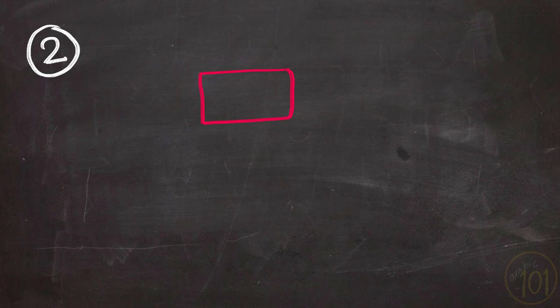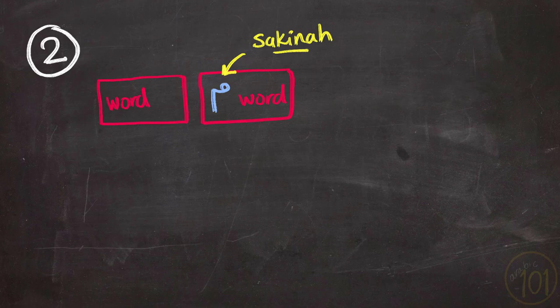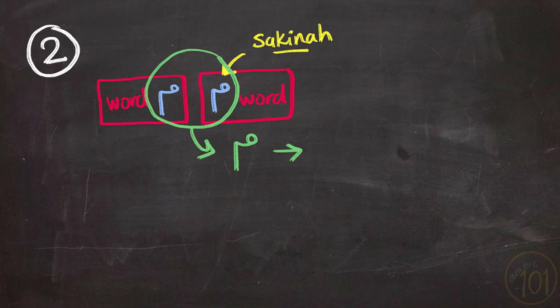Second, if Meem Sakina is followed by a word beginning with another Meem, you will merge both Meems together producing one Meem with two Harakat, like in these examples.